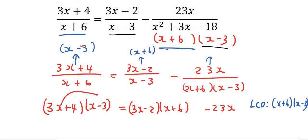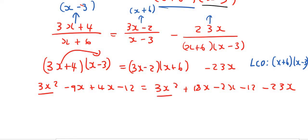Okay, so now we just multiply these brackets together. So that's going to be 3x squared minus 9x plus 4x minus 12 equals to 3x squared plus 18x minus 2x minus 12 minus 23x. Now because we have these x squares, or they're actually going to cancel, they're the same on both sides, so they will cancel out. And so what I'm going to do is I'm going to simplify each side. So this here becomes minus 5x minus 12, and then this part here becomes minus 7x minus 12.